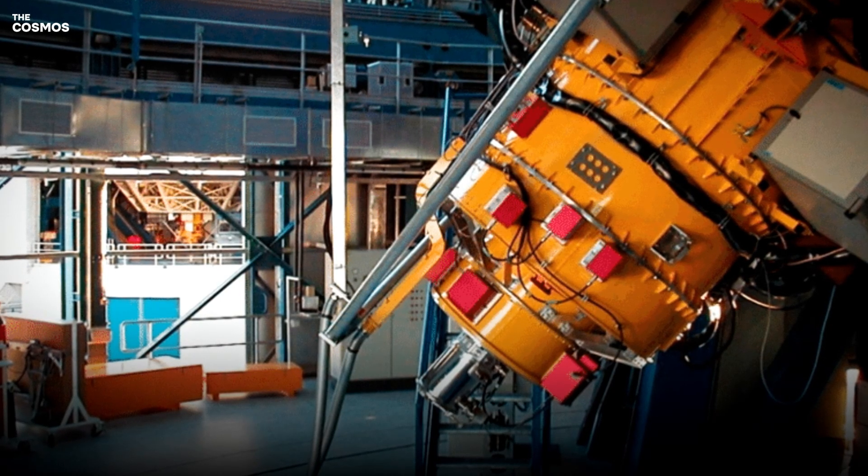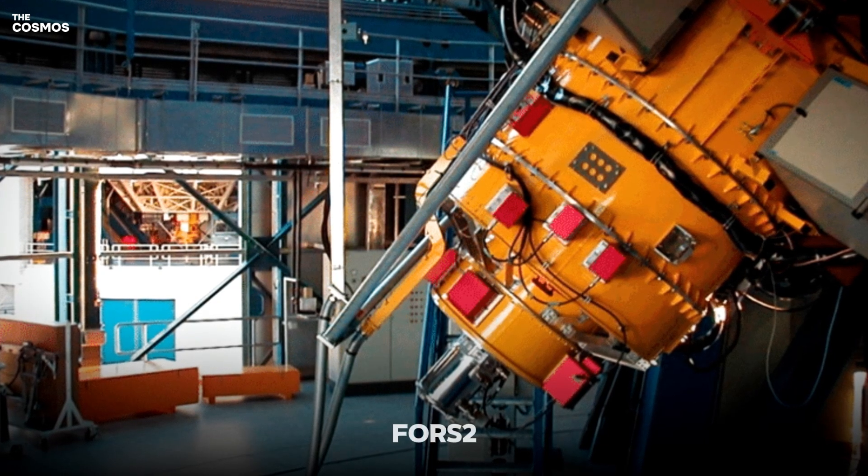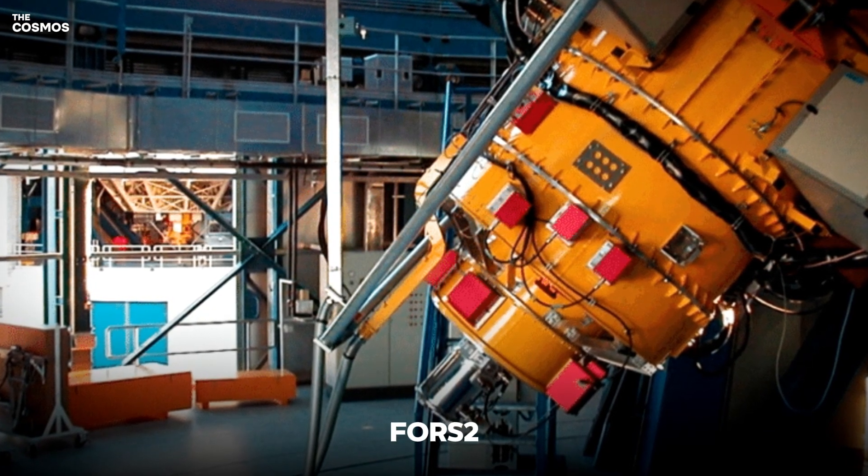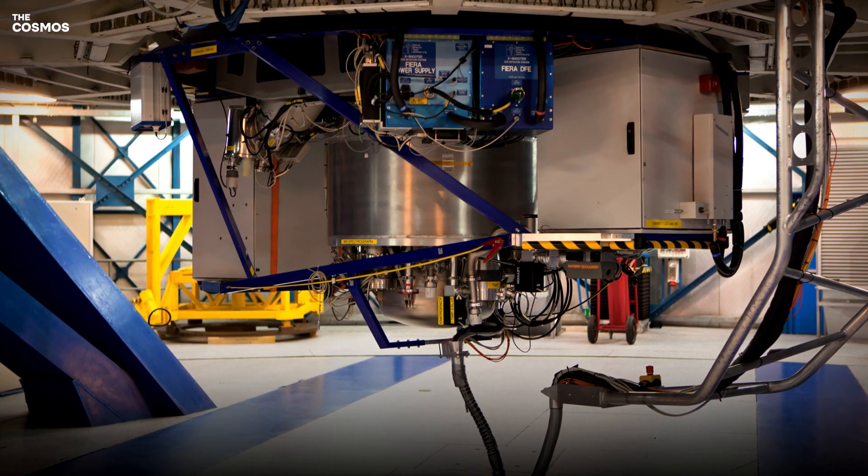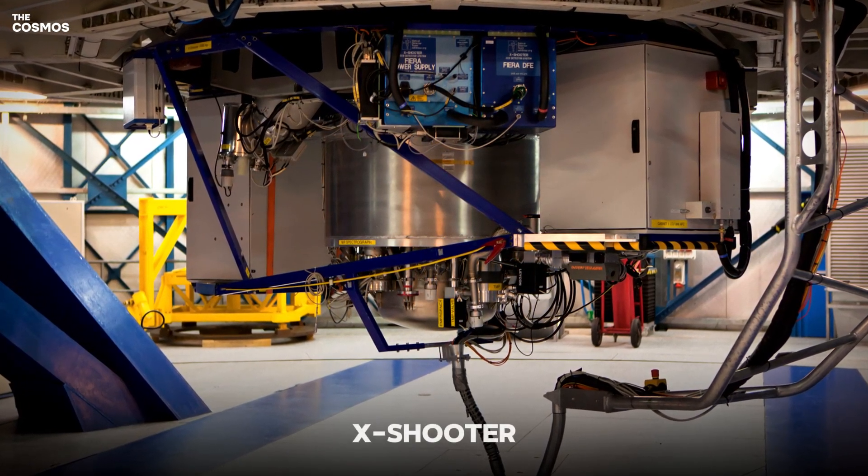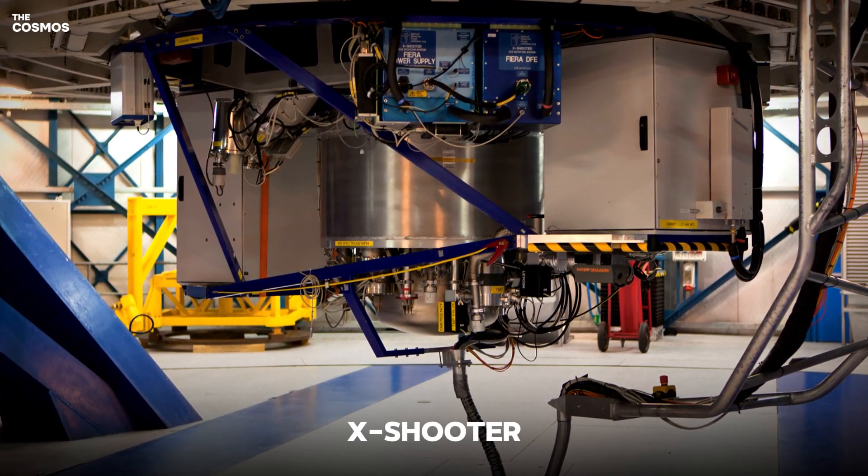The study utilized FORS2, a versatile instrument on the VLT, to detect the metal scar and establish its connection to the star's magnetic field. This was supported by archival data from the VLT's X-Shooter instrument, further confirming the findings.